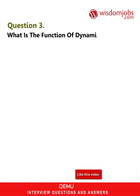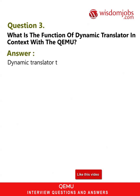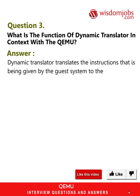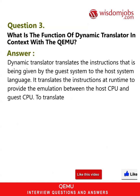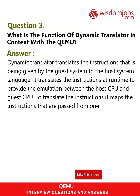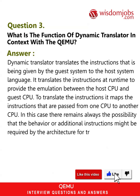Question 3: What is the function of the dynamic translator in context with QEMU? Answer: The dynamic translator translates the instructions given by the guest system into the host system language. It translates instructions at runtime to provide emulation between the host CPU and guest CPU. To translate the instructions, it maps instructions passed from one CPU to another CPU. There always remains the possibility that additional instructions might be required by the architecture for translations.